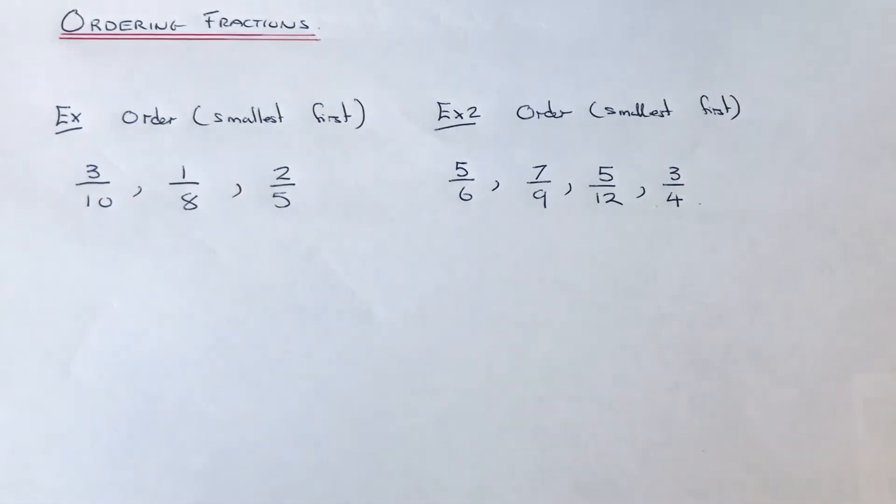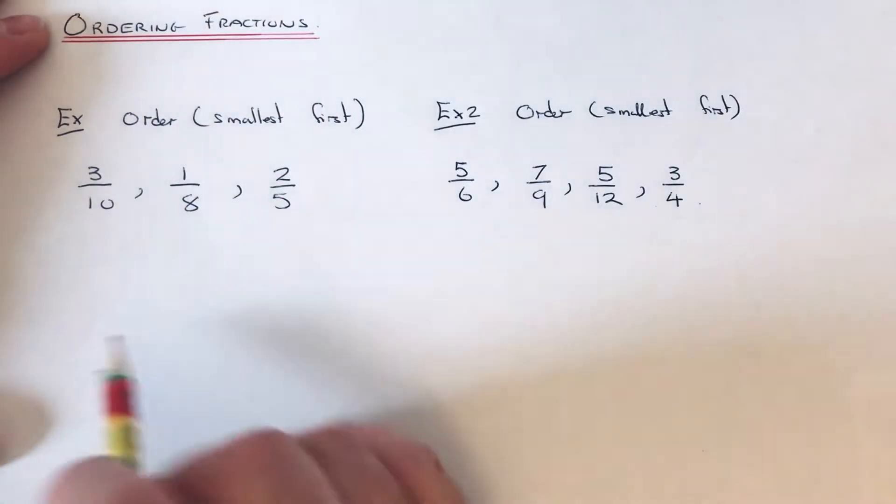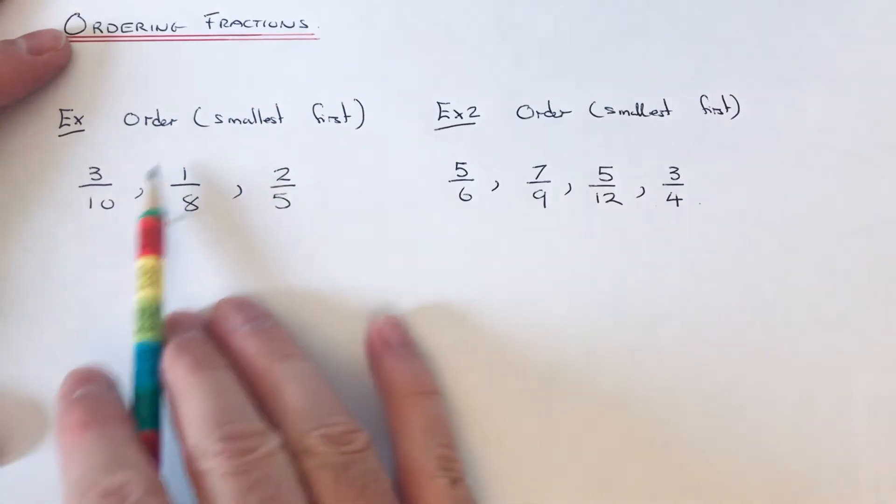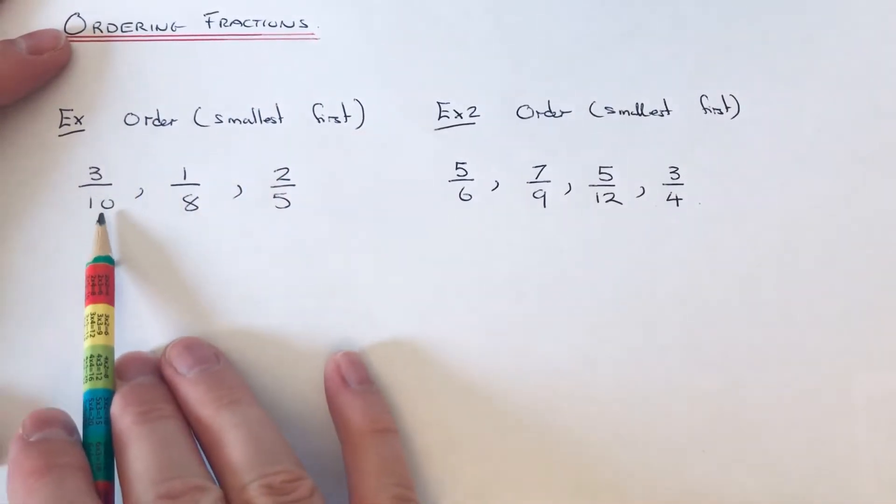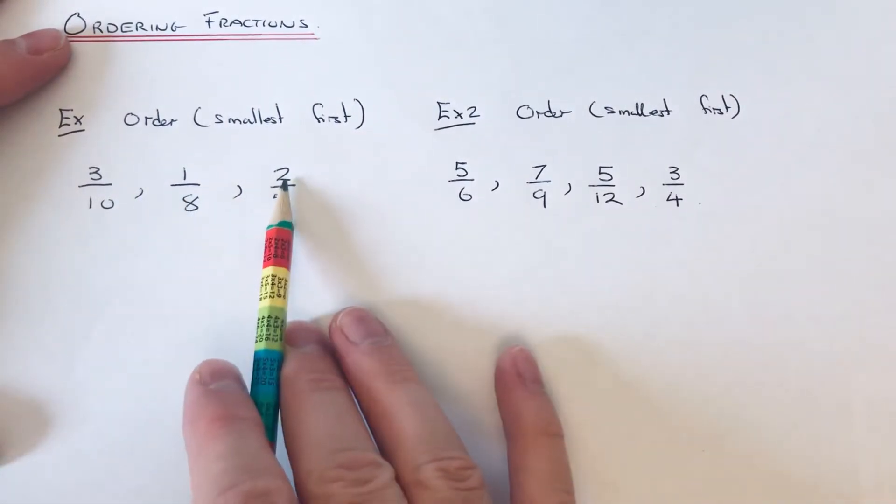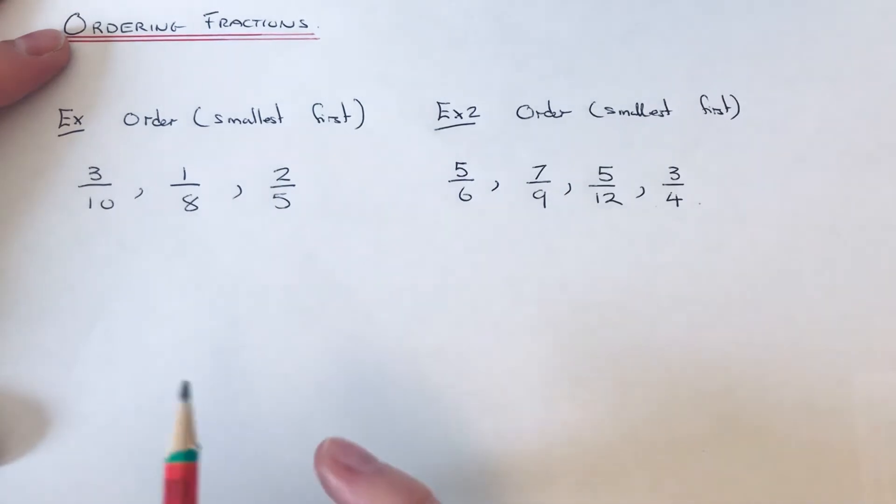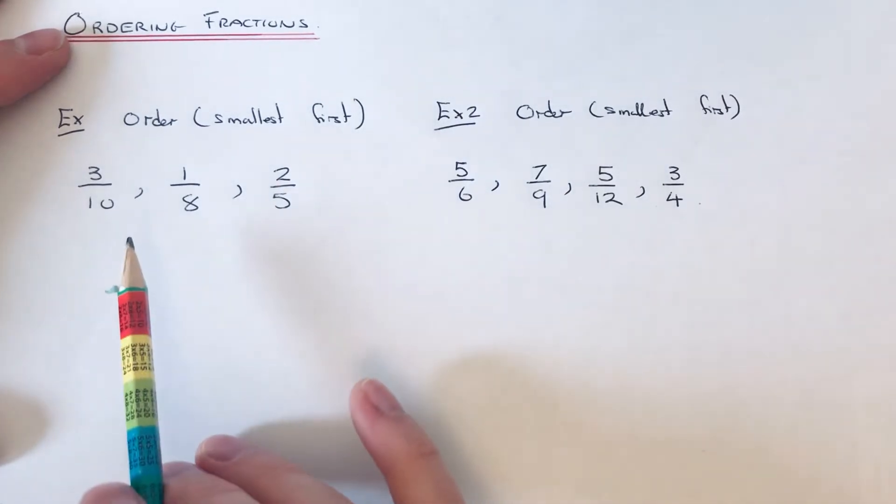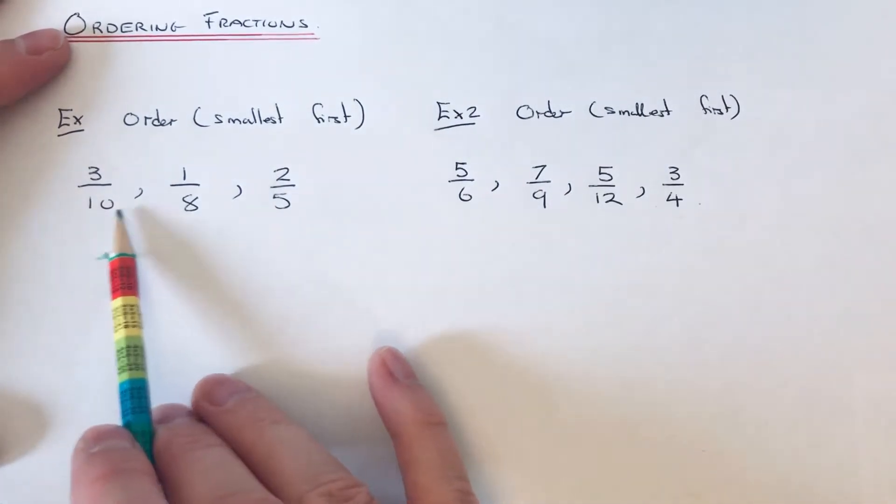From smallest to biggest. Let's have a look at the first example. I've got order these fractions: 3/10, 1/8, and 2/5. We need to work out the lowest common multiple of our denominators.